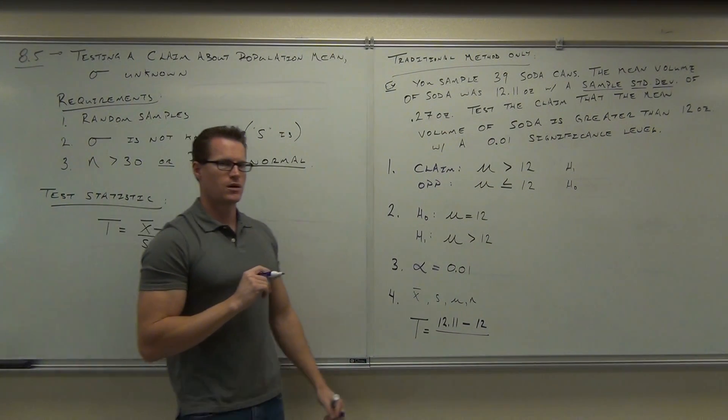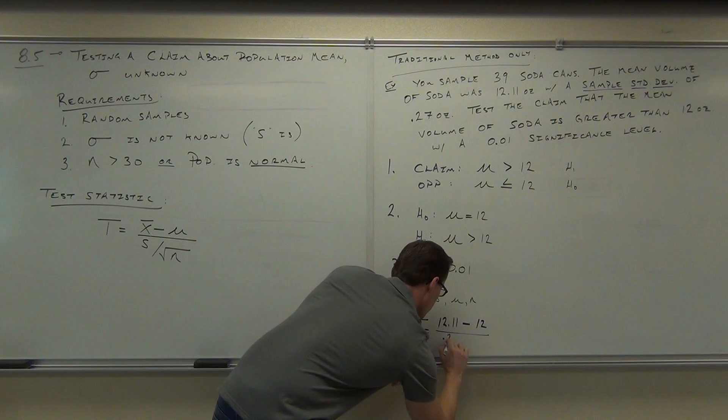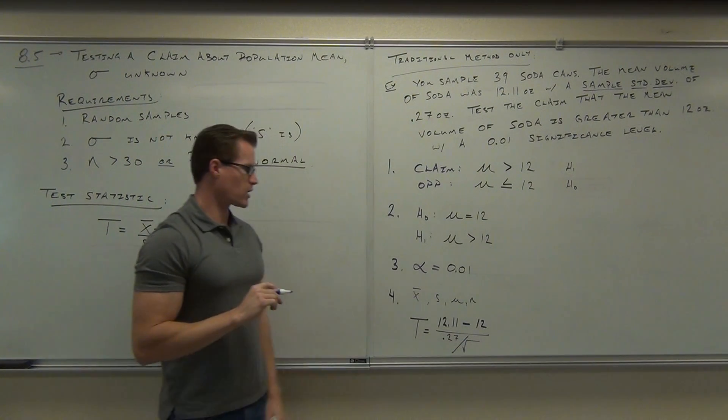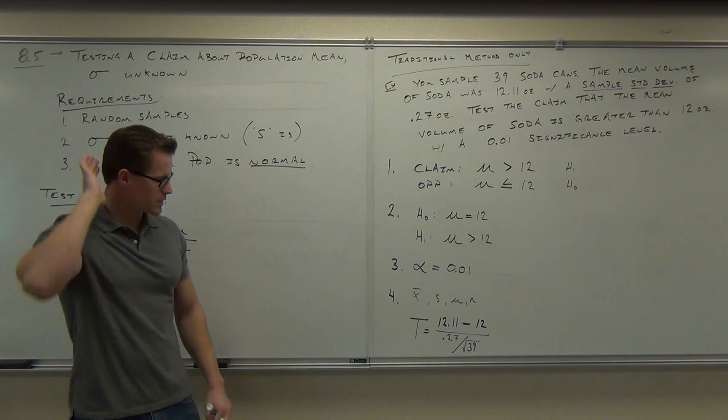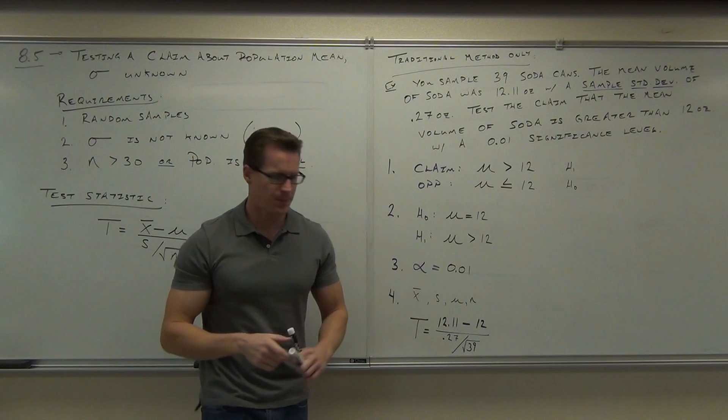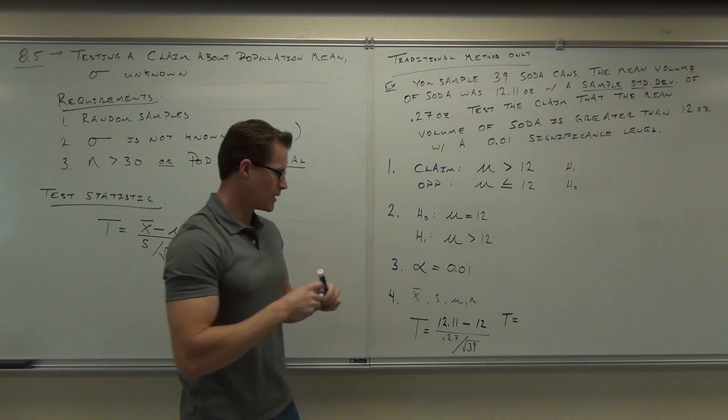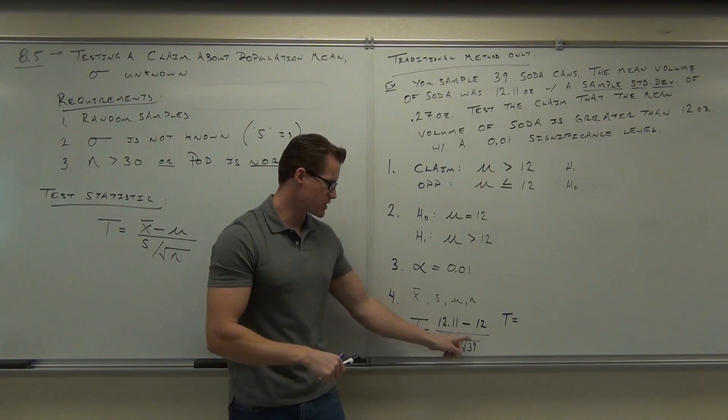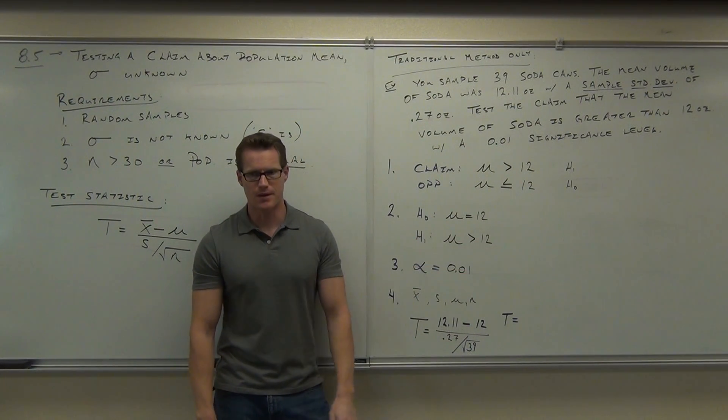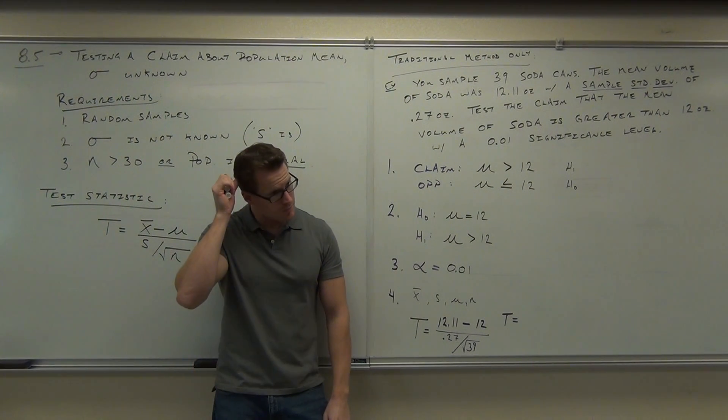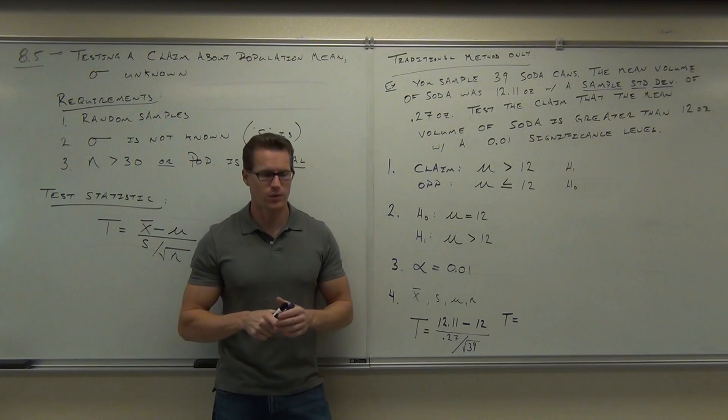Divided by, what is our S in this case? Why is it S and not sigma again? Because it's sample. Divided by the square root of, what's our square root? I have a square root of 39. Do the math for me. Figure that thing out. Remember, you can do this as a way of getting around this whole division thing. You can do 12.11 minus 12, you're going to do 0.11. Divide that by 0.27 and multiply it by the square root of 39. You should get 2.something. Two point what? Two point five four. Two point five four.